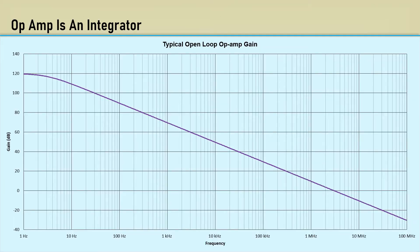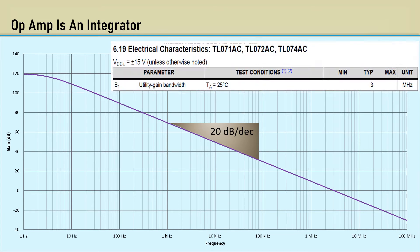Recall the open-loop frequency response of the op-amp. It has a really high gain at DC and rolls off with a 20 dB per decade single-pole response. So, an op-amp is basically an integrator. Note this TL07 series op-amp has a 3 MHz unity gain bandwidth.